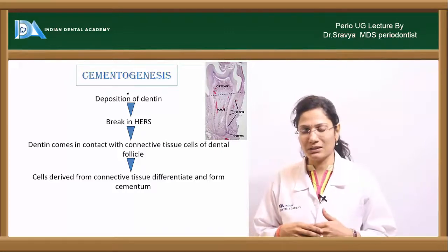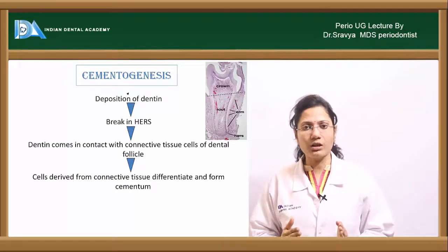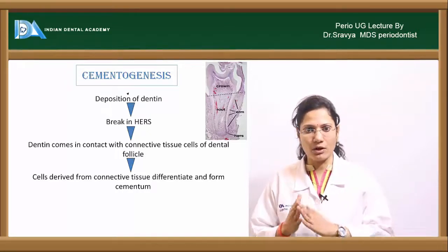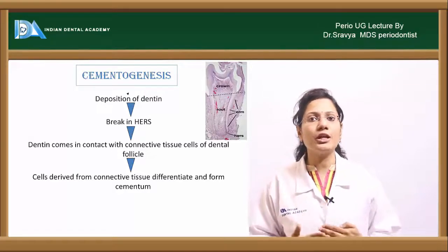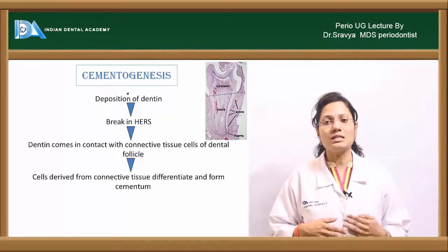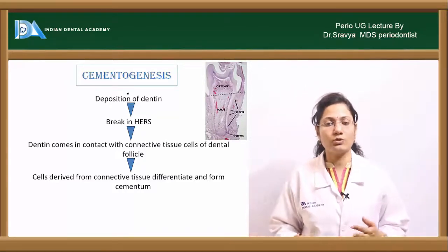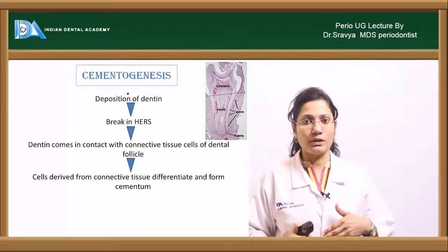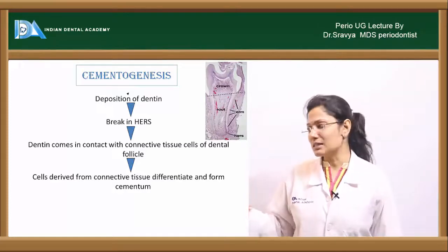Once there is a break in Hertwig's epithelial root sheath, the dentine is directly in contact with the dental follicular cells. This contact stimulates dental follicular cells to differentiate into cementoblasts. Cementoblasts then lay down the organic matrix — the cementoid — which gets calcified over time, forming cementum.